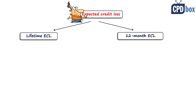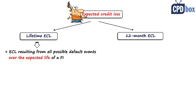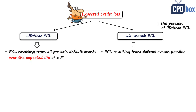Let me explain the difference between 12-month ECL and lifetime expected credit loss. Lifetime expected credit loss is the expected credit loss resulting from all possible default events over the expected life of the financial instrument. As opposed to that, 12-month expected credit loss is just a portion of lifetime ECL — it is the expected credit loss resulting from default events possible within 12 months after the reporting date. Be careful: 12-month ECL is not the amount of lost cash flows within the next 12 months.